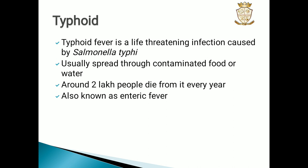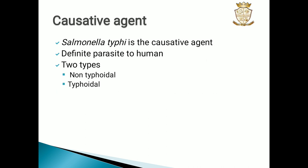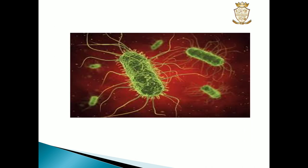The next disease is typhoid, caused by Salmonella typhi. Typhoid fever is a life-threatening infection caused by Salmonella typhi. It is usually spread through contaminated food or water, and around two lakh people die from it every year. It is also known as enteric fever. Salmonella typhi can be non-typhoidal or typhoidal, and it is a definite parasite of humans. Here you can see the picture of Salmonella typhi.